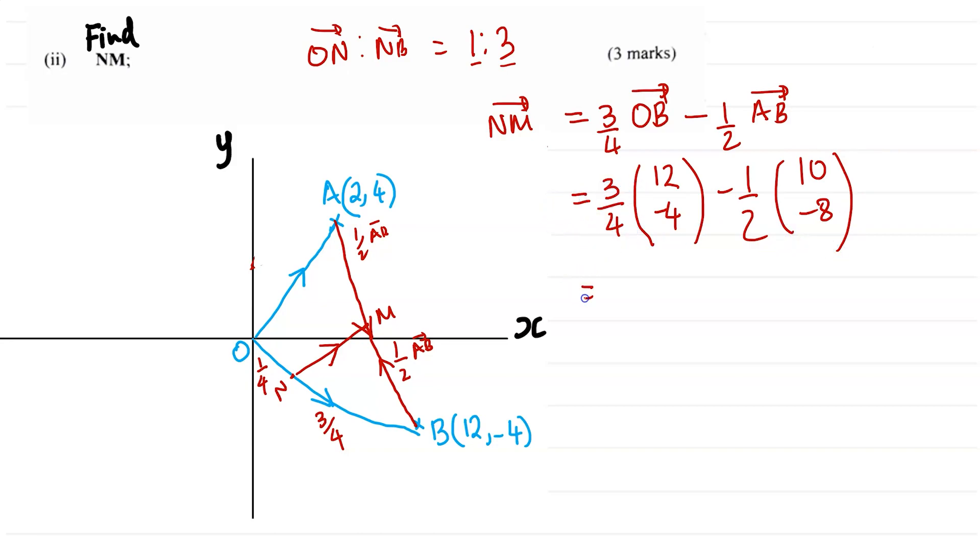So let's work this out then. 3/4 times 12, what do we get? 12 divided by 4 is 3, 3 times 3 is 9. So this part, the first number becomes 9. And then 3/4 of -4: -4 divided by 4 is -1 times 3, you will get -3. So this part will give you (9, -3). Now take away half of 10, so that's going to be 5, and half of -8, which is -4. If you subtract this, then 9 take away 5 would be 4. -3 take away -4 will be -3 + 4, which is going to give you 1. So the vector NM then is equal to (4, 1).